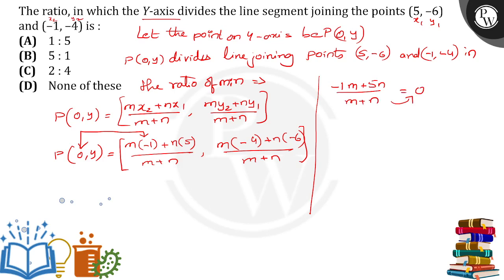If I transpose m plus n to RHS it will become 0. So minus 1 m plus 5 n is 0. Now minus 1 m is equal to minus 5 n. So minus minus cancel, m equal to 5 n, which means m by n is equal to 5 by 1, that is equal to 5 is to 1.